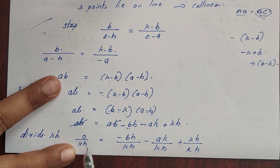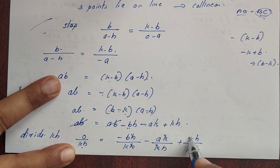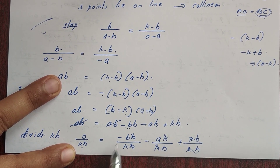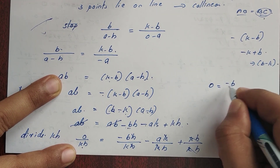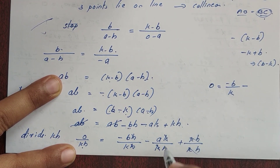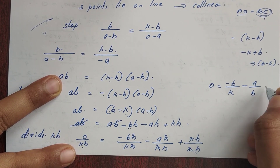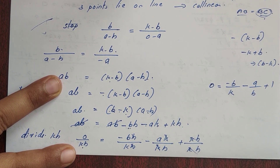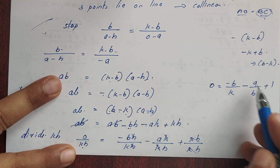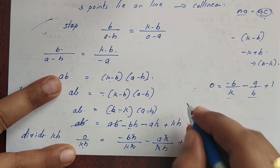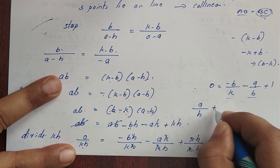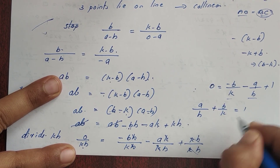Cancelling ab from both sides, then dividing throughout by kh: 0 equals minus b by kh minus a by h plus 1. Rearranging gives a by h plus b by k equals 1, which is what we needed to prove.